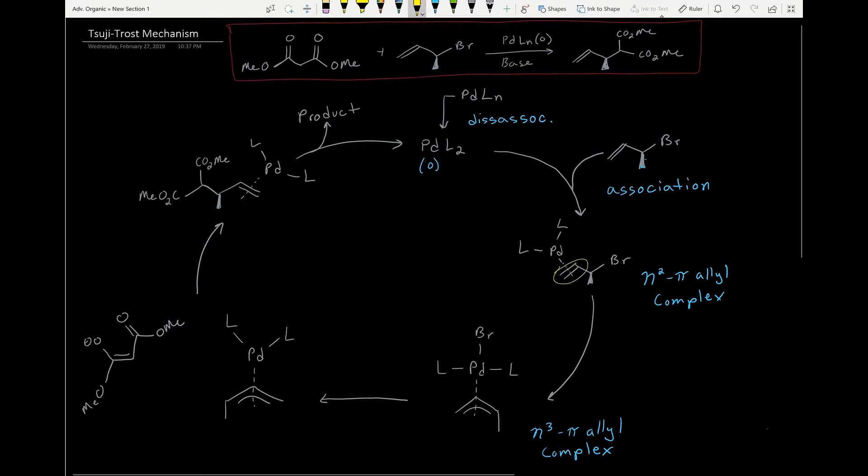So this palladium is only associated with these two carbons right now, so it forms an η² π-allyl complex, and then we're going to do an oxidative addition to form an η³ π-allyl complex, where the palladium is associated with all three of these carbons, and the bromine has been added up here, and that gives our palladium an oxidation state of two, since both of these are minus one ligands.